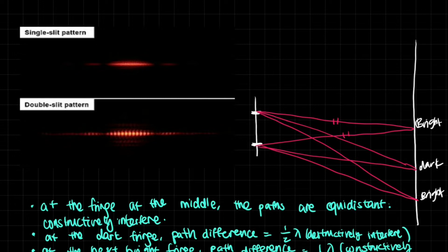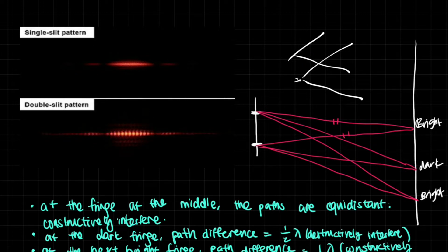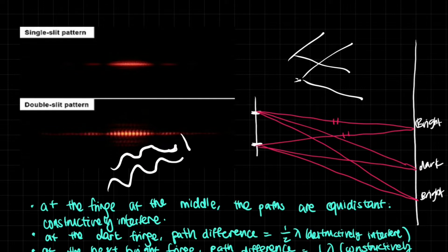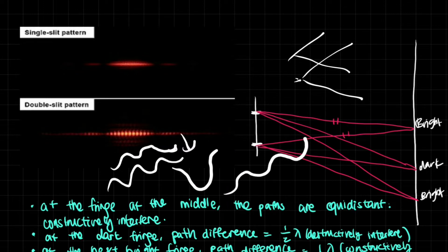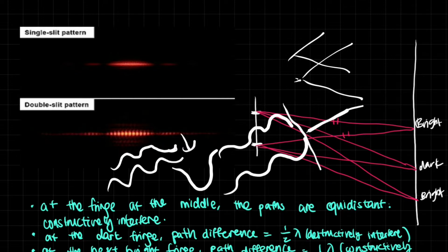How could it be that we were giving out just a solid block of light from each slit, yet we had this broken-up pattern? That's because of interference. At certain points, the light waves would be going in the same direction — both upward — so the resultant wave would be much bigger. At other points, one wave goes up while the other goes down, so the resultant amplitude is zero. That's the dark section between the bright sections.